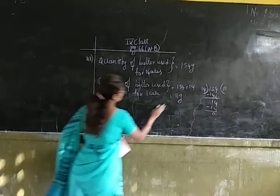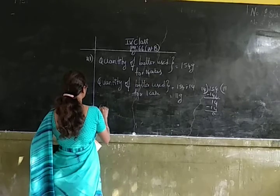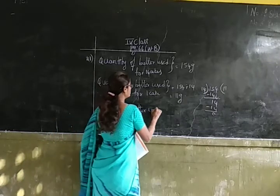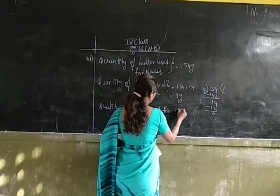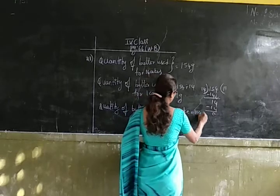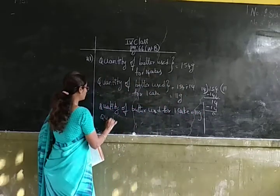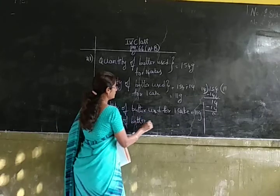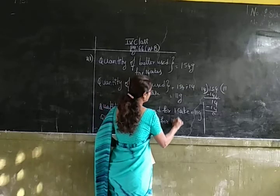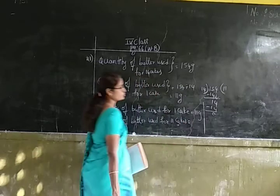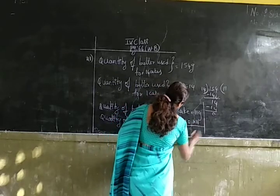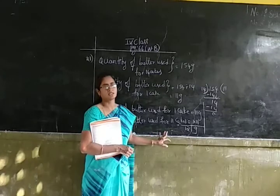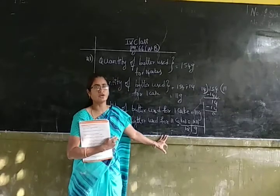Now we have to find out how many grams of butter are used for making 11 cakes. Quantity of butter used for 1 cake is 11 grams. For 11 cakes, we use multiplication: 11 multiplied by 11 is 121. So 121 grams of butter is used for making 11 cakes.